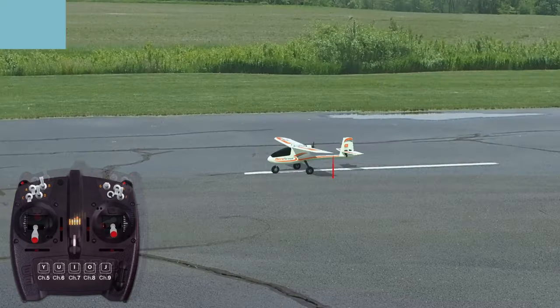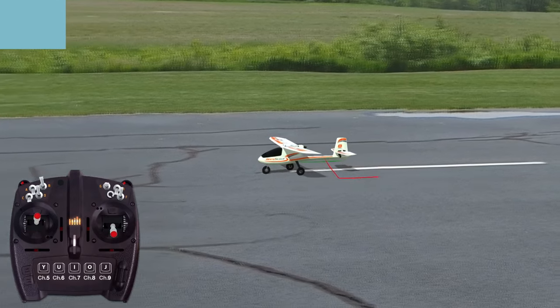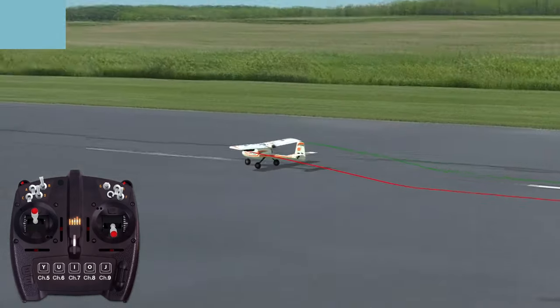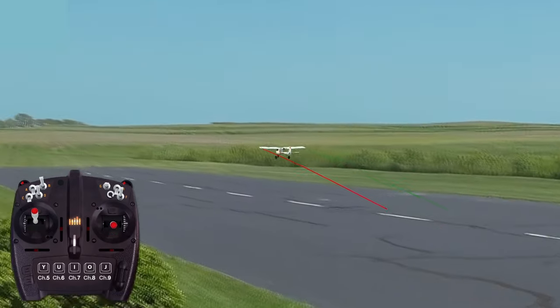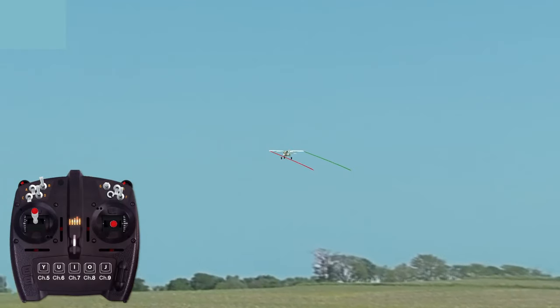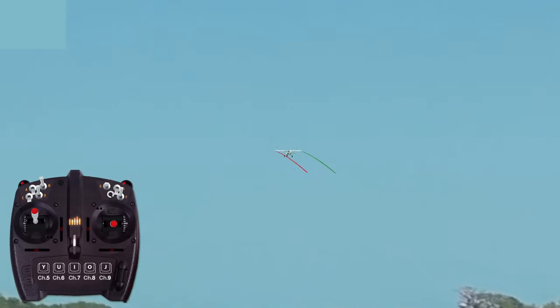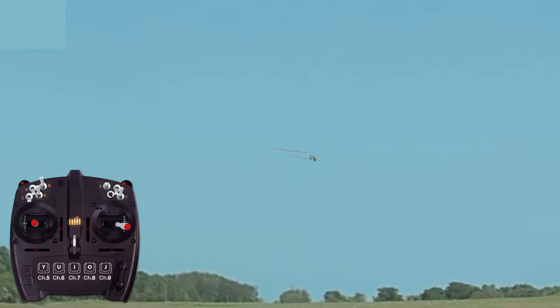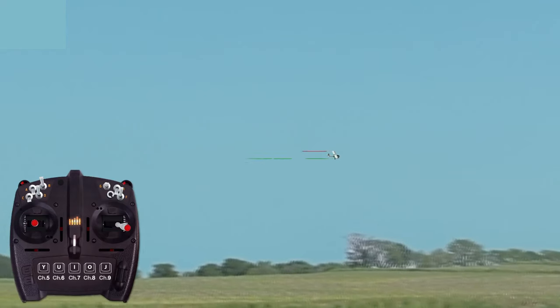In the beginner mode, takeoffs are performed using more than half throttle and holding in some up elevator to pull the airplane up away from the ground. The higher throttle setting should cause the plane to maintain a steady climb. The climb angle is then fine-tuned with the elevator, and when the plane has achieved the preferred altitude, the throttle is set for level flight at half throttle.